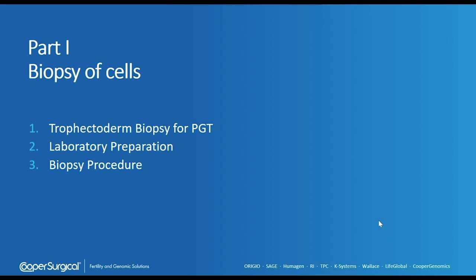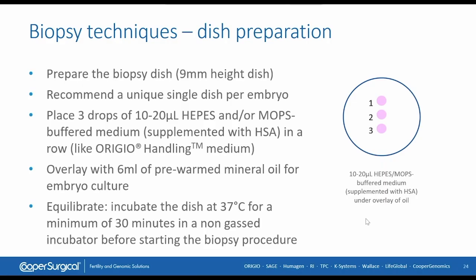Now let's focus on the biopsy procedure itself. We need to prepare our biopsy dish — this is a standard ICSI dish, a 9-millimeter height dish. We will prepare these dishes at room temperature: make three drops of 10 to 20 microliters of a HEPES and/or MOPS buffered medium, then put pre-warmed mineral oil on top. We will incubate these dishes for at least 30 minutes to reach the correct temperature in a non-gas incubator before starting the biopsy procedure.